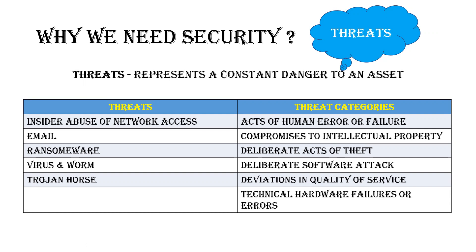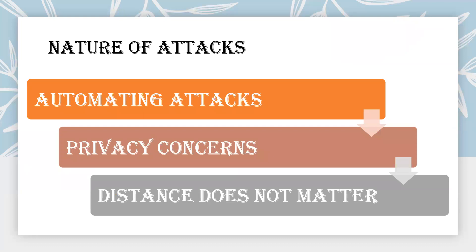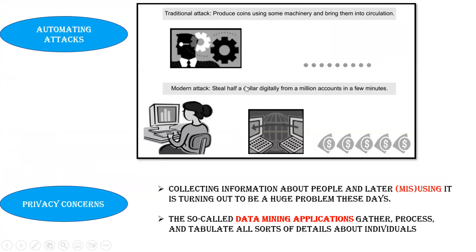Because of these many threats, we need security. We can classify small attacks happening around us. The nature of attacks we can see includes automating attacks, privacy concerns, and the fact that distance does not matter. When considering an automating attack, it is not like software coded to hack an entire system all at once — it works more subtly. For example, there is a modern attack involving stealing small amounts, like a dollar a month.